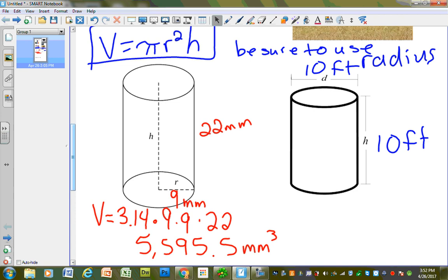I have to find my volume. When I look at my volume formula, it doesn't have a D for diameter. I have to use the radius. If my diameter is 10, my radius is 5. So I have 3.14 times 5 times 5 times 10. I know 5 times 5 is 25, and 25 times 10 is 250. So I'll type in 250 times 3.14, which gives me 785 cubic feet.